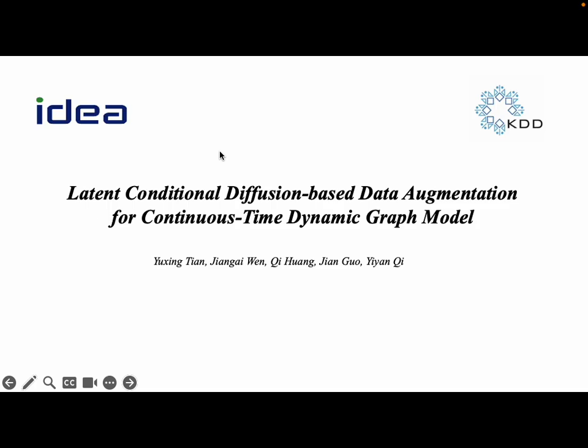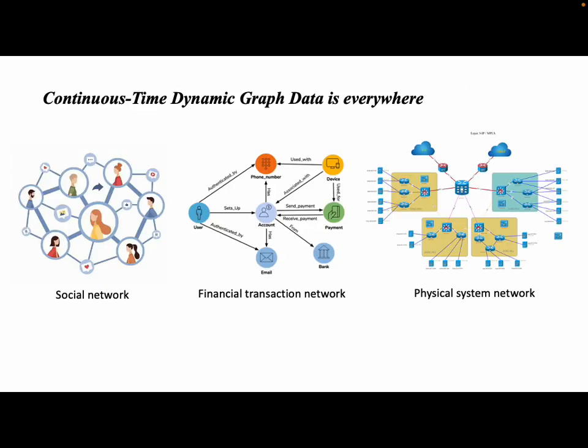Hi, this is a short promotional video for the paper, Latent Conditional Diffusion-Based Data Augmentation for Continuous-Time Dynamic Graph Model for KDD 2024. Continuous-time dynamic graph data are everywhere and prevalent in real-world applications such as social networks, financial transaction networks, and physical system networks.